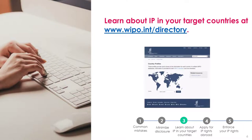Let's look at another useful place to learn about IP. When you're looking for IP information specific to a country, WIPO's Country Profile webpages are a really good place to start. Visit www.wipo.int/directory/en. From this page, select and open the WIPO Country Profile page for your selected country. On the Country Profile page, you'll find the contact information of the local IP office, legal information, IP statistics, innovation rankings, and much more.